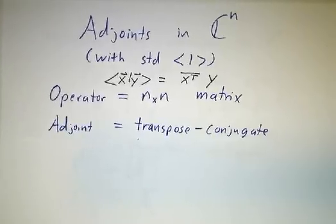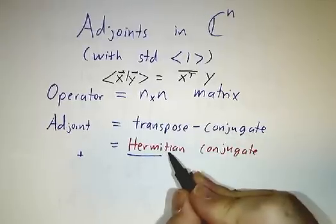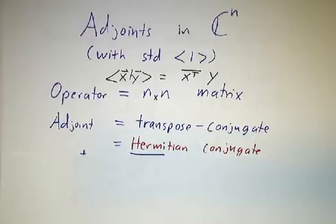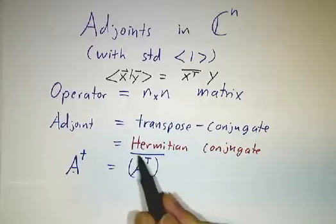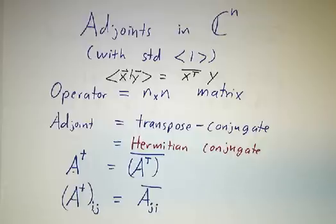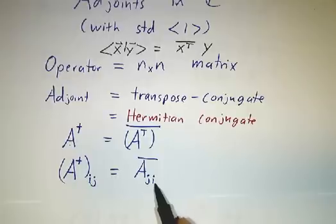And in fact, the adjoint is the transpose conjugate. The transpose conjugate of a matrix is sometimes called the Hermitian conjugate. So I claim that A-dagger is A-transpose conjugate. In other words, the ij entry of A-dagger is the ji entry of A conjugated.